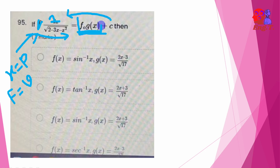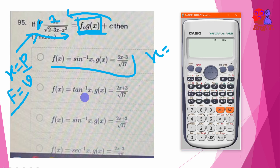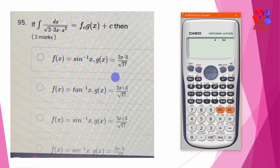We have f of g(x), derivative of x, and we have a point here. We have f of g(x) — a combination of this function. We have three options, the correct answer, and a calculator. We have to start with this function.